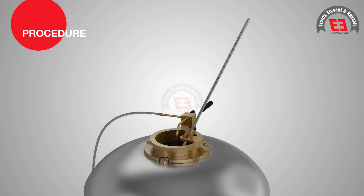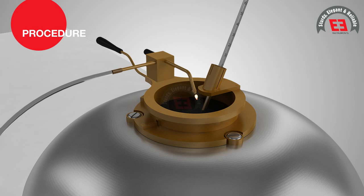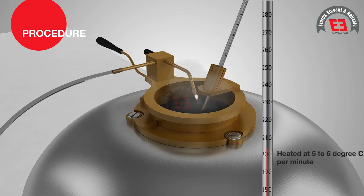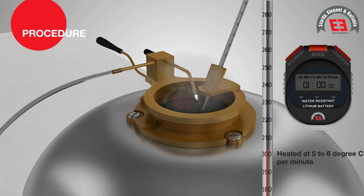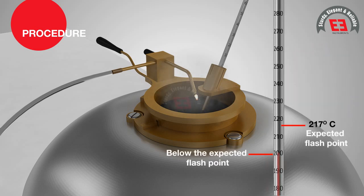The thermometer is inserted and test flame is lighted and adjusted to the size of 4 mm bead. The bitumen sample in the cup is heated at the rate of 5 to 6 degrees Celsius per minute. When the specimen attains a temperature of about 17 degrees Celsius below the expected flash point,